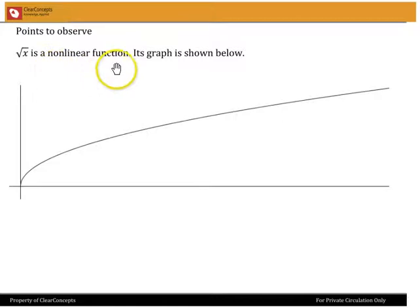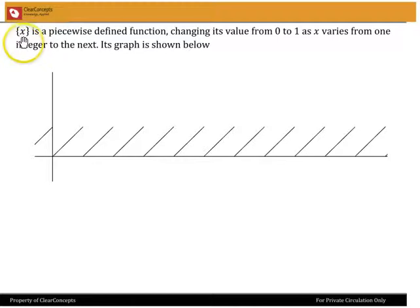And its graph is here. The second thing is that the fractional part of X is a piecewise defined function. It varies from 0 to 1 as X goes from one integer to the next. So when X is an integer, it is 0, it goes up to 1, comes back down to 0 at an integer, goes back up to 1, comes back down to 0, and so on.